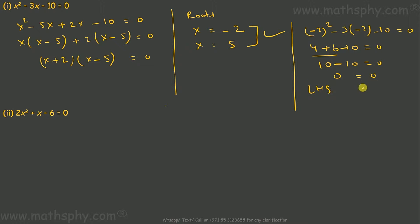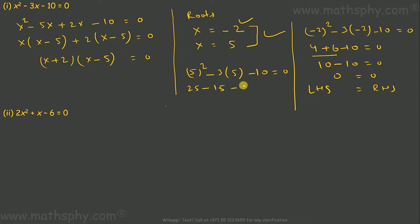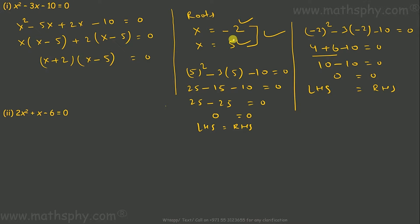Let's take x = 5: 5² - 3(5) - 10 = 25 - 15 - 10 = 0. Left hand side equals right hand side, so 5 is also justified. The roots for this equation are x = -2 and x = 5.